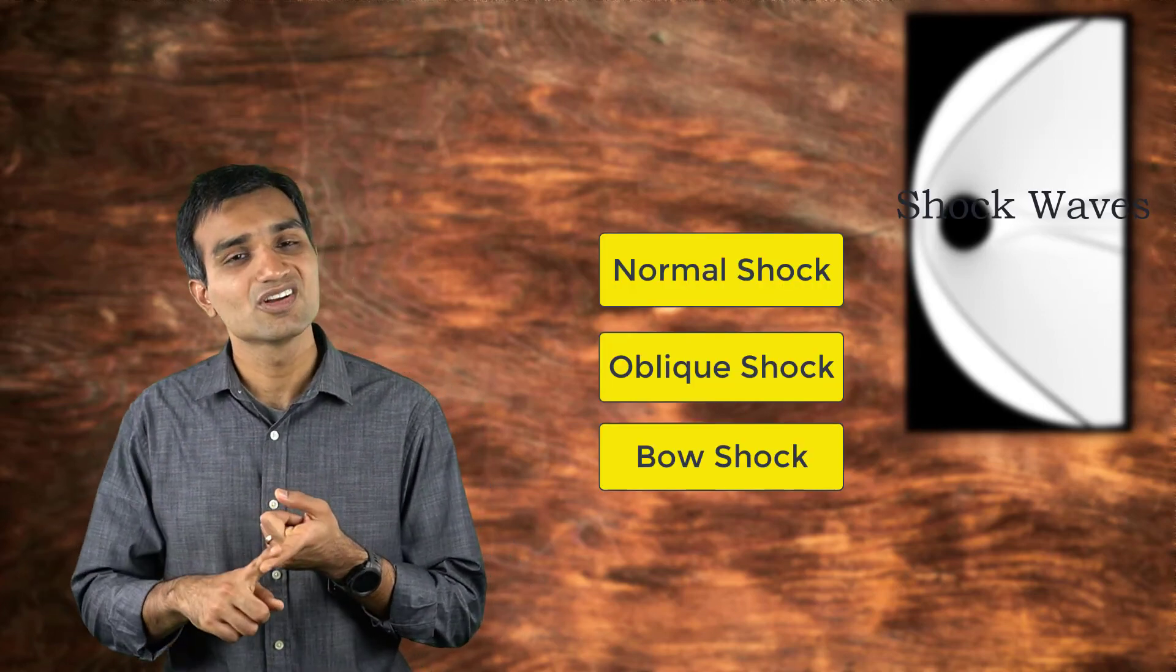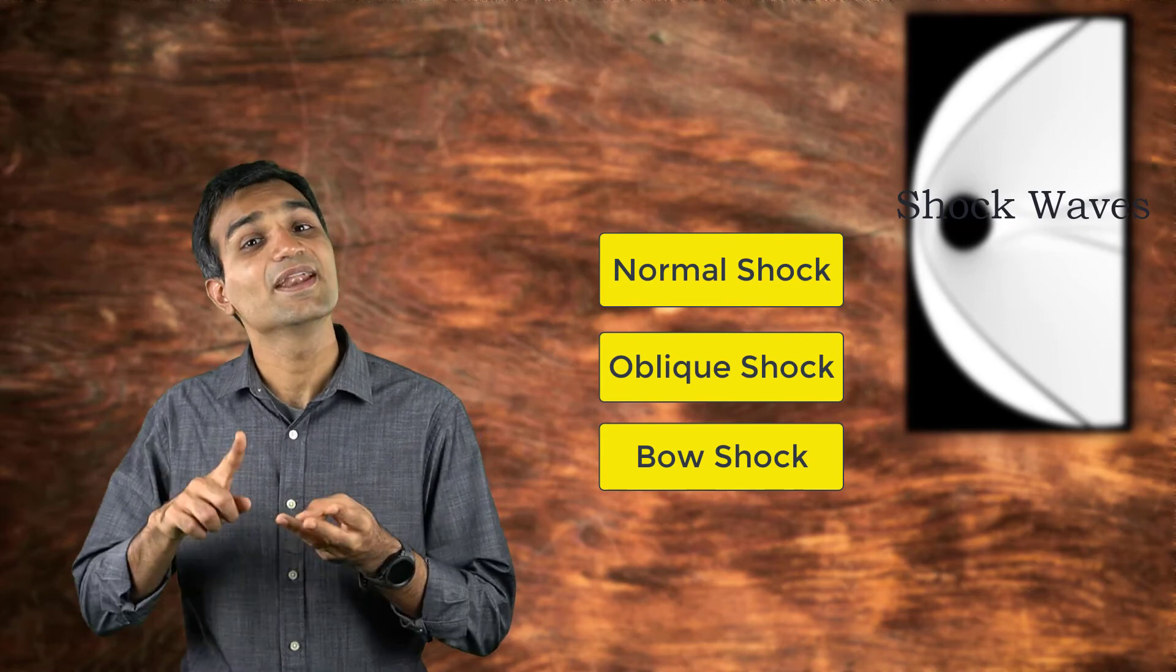Shocks can be steady or unsteady phenomena. Typically, steady-state shocks are of three types: normal shock, oblique shock, and bow shock.